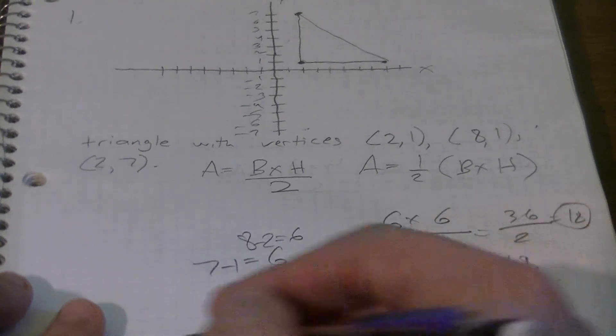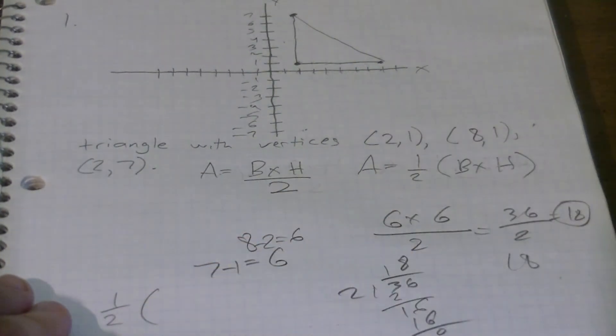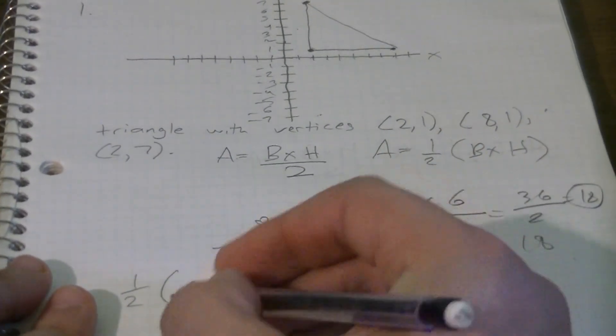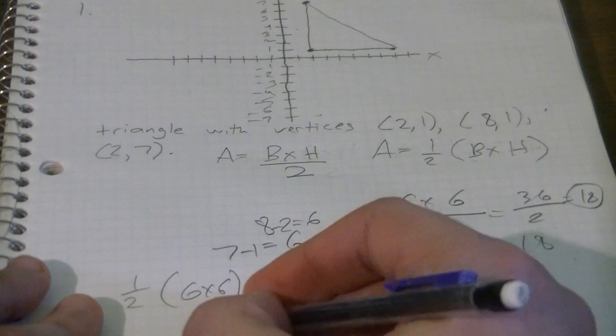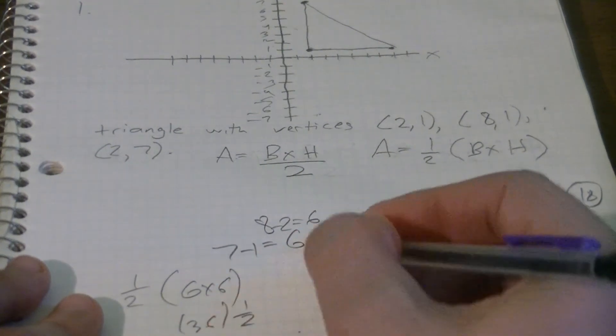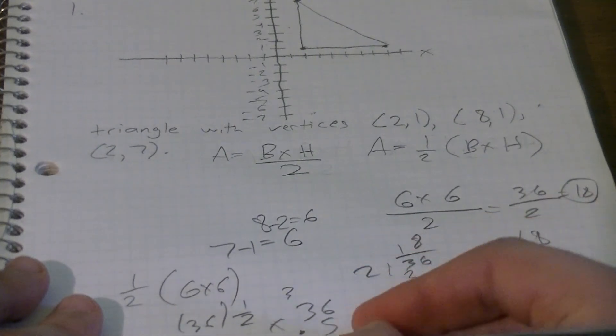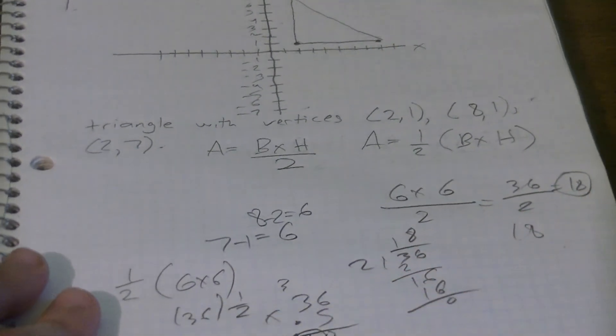Or we could have done one-half times base times height, which would have been six times six, right? So 36 times a half, 36 times 0.5. We get 30, 15, 80... move our decimal: 18. Same thing, two different ways.